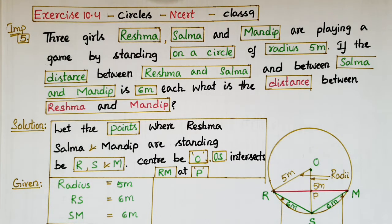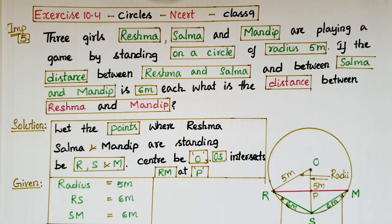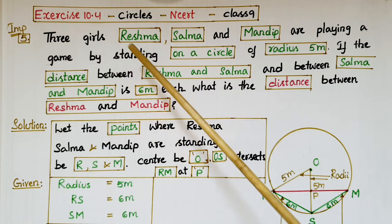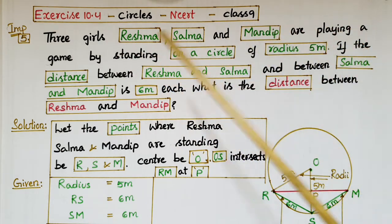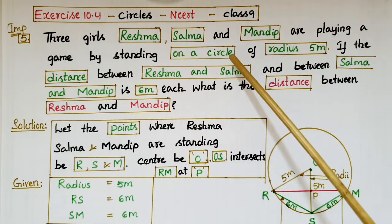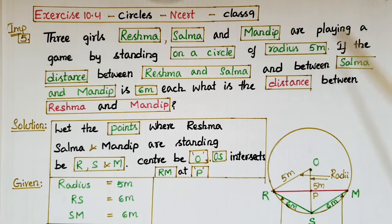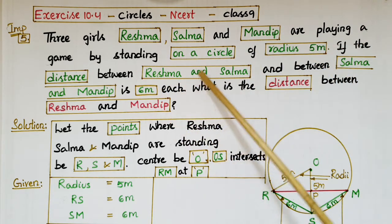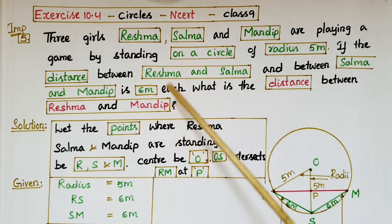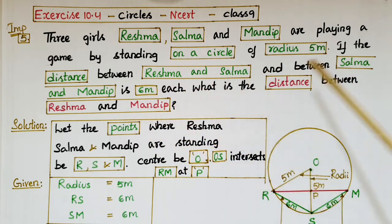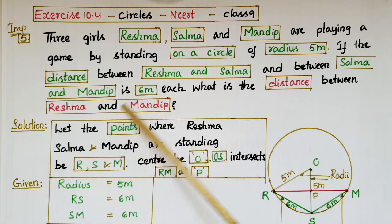Hello everyone, today I am going to tell the solution of the 5th problem from Exercise 10.4 from the Circles chapter from NCERT Class 9. The problem is: three girls Reshma, Salma, and Mandip are playing a game by standing on a circle of radius 5 meters. If the distance between Reshma and Salma and between Salma and Mandip is 6 meters each, what is the distance between Reshma and Mandip?